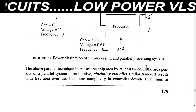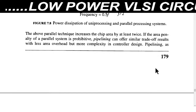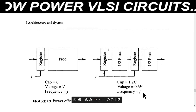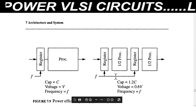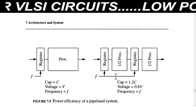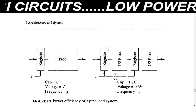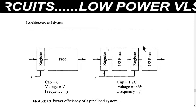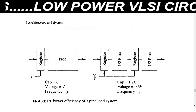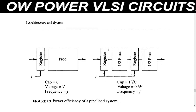We can do parallel processing without using double units — we can use pipelining. This structure shows where we use pipelining. We are not using twice the units as before; we just use a pipelining structure for parallel processing. Here we use a single frequency f but provide it according to our requirement.